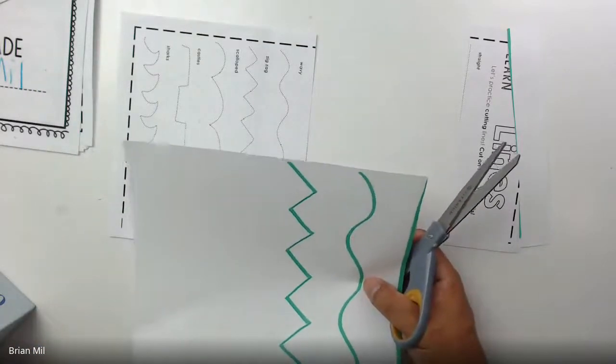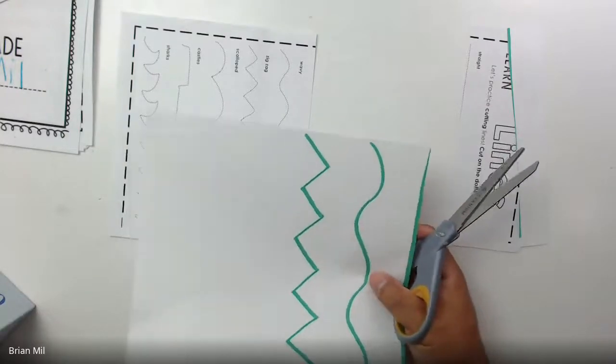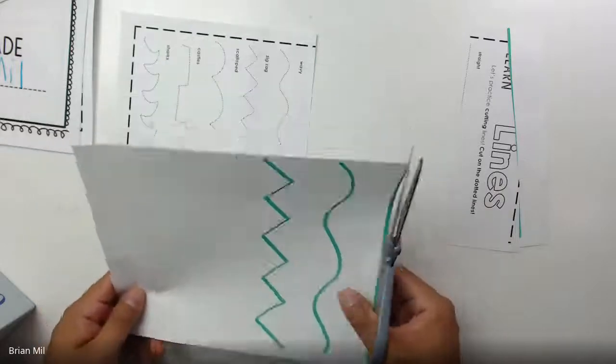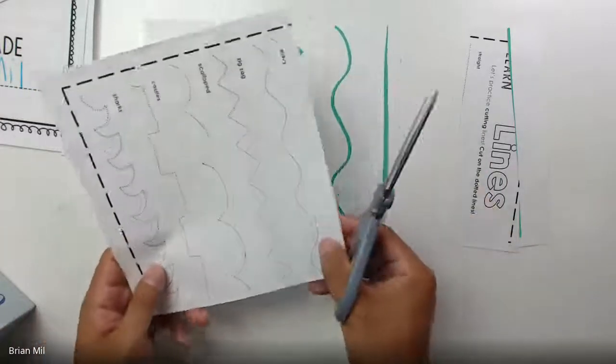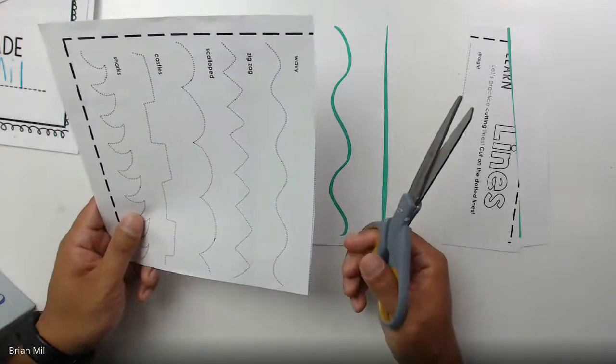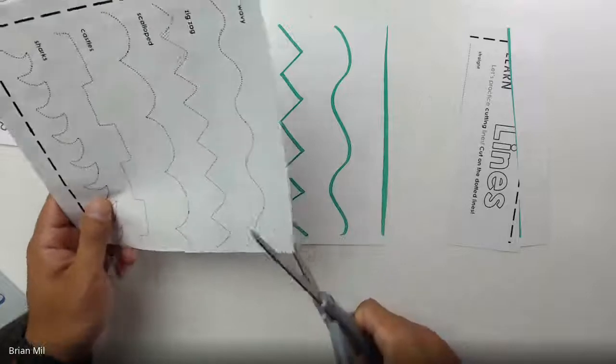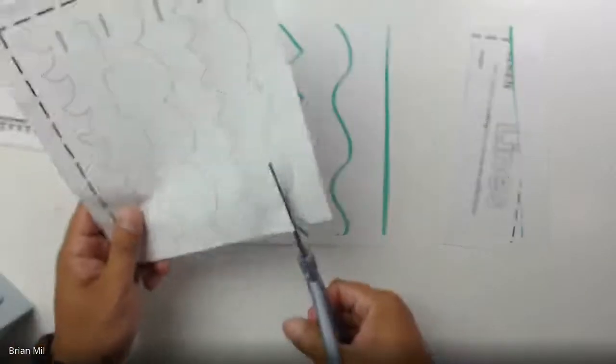We can recycle that later. If you had the blank sheet of paper, just do the same thing. We're going to cut that line off just like this and then put it to the side. That's our scraps. We don't need scraps, we can recycle that later.